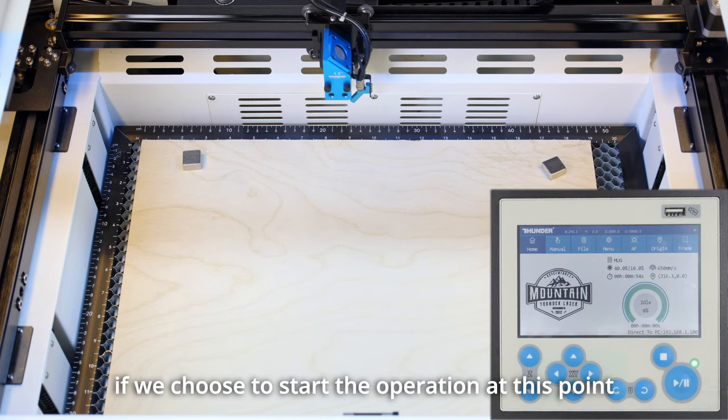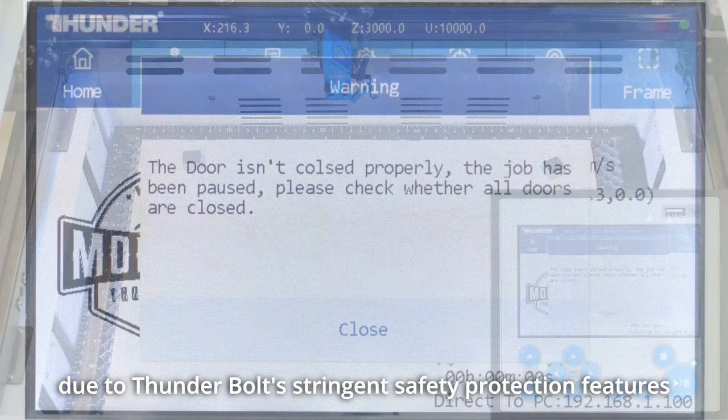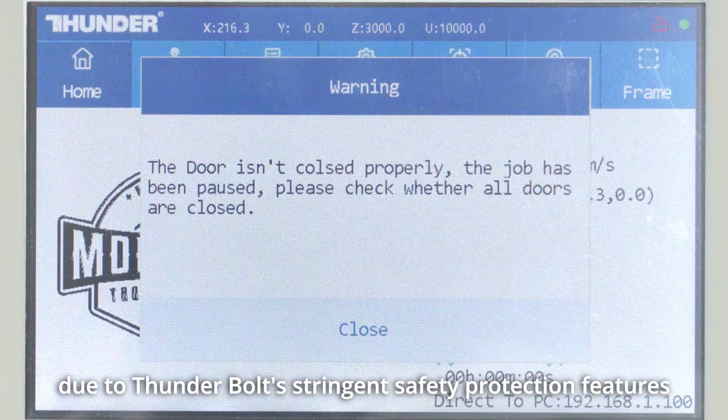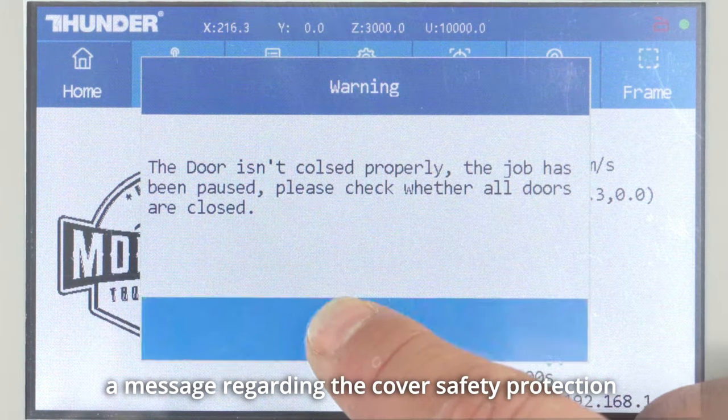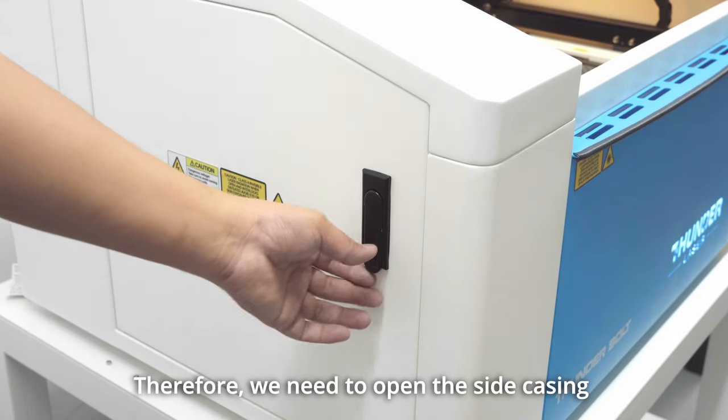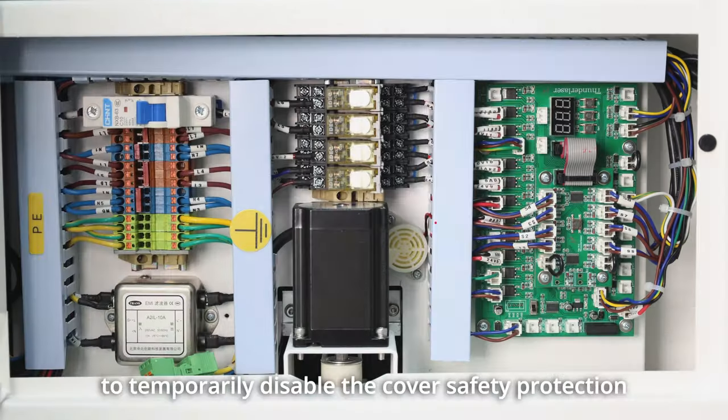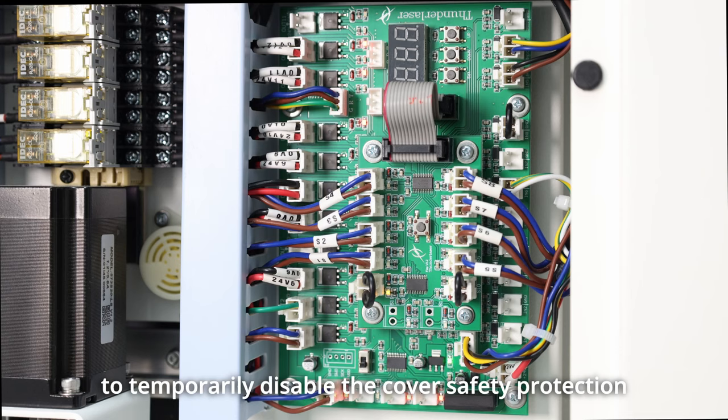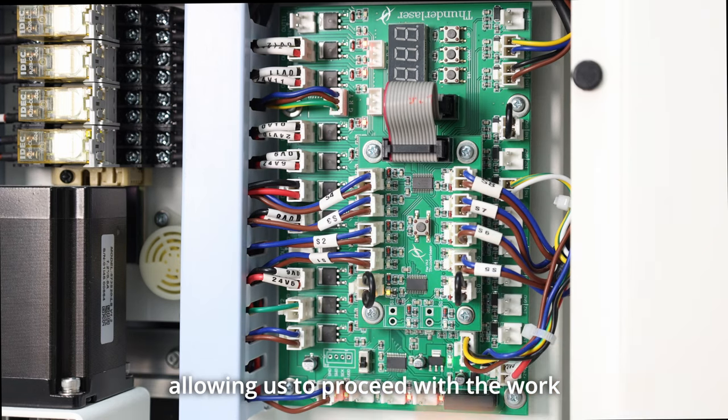However, if we choose to start the operation at this point, due to Thunder Bolt's stringent safety protection features, a message regarding the cover safety protection will appear on the panel. Therefore, we need to open the side casing and press the small button to temporarily disable the cover safety protection, allowing us to proceed with the work.